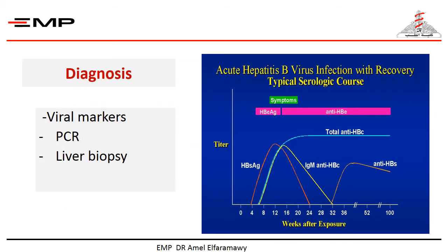The diagnosis of acute hepatitis B infection is confirmed by the presence of hepatitis B surface antigen and hepatitis B core IgM. Recovery from acute infection is accompanied by hepatitis B surface antigen clearance and the appearance of hepatitis B surface antibody and hepatitis B core IgG.